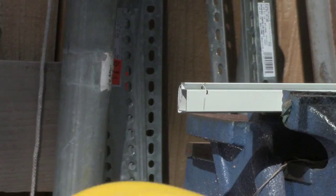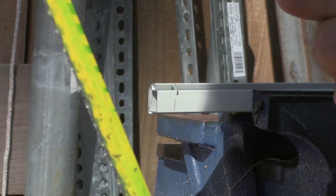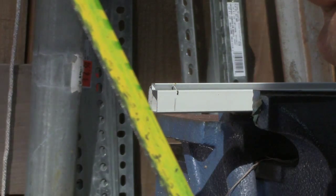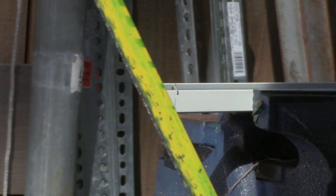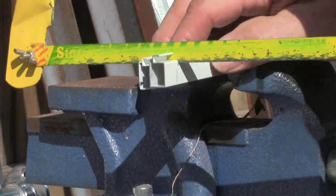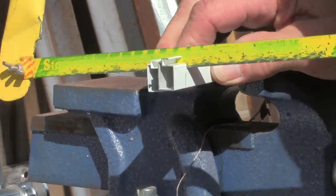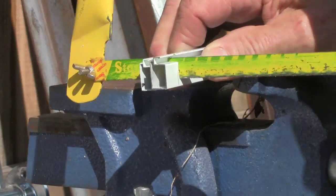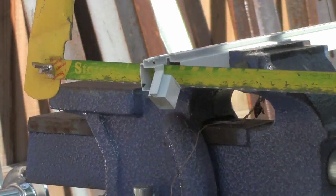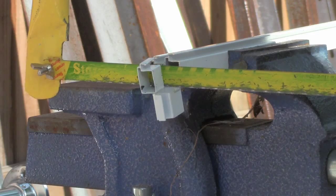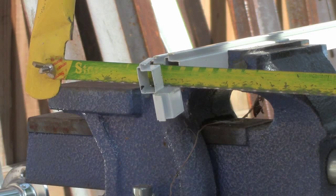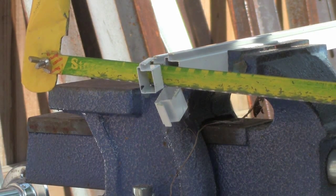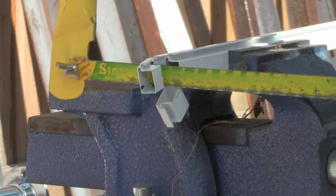When you want to cut this stuff, you want to get a hacksaw blade that's at least 32 teeth per inch. If you get anything bigger than that, in other words a 24 or 18, this thing is going to be hanging up all the time. Even a 32 teeth, it's kind of hard to get through this because this aluminum is so thin. You can see how much difficulty I'm having. I normally cut these on a miter saw with a 100 tooth blade. They make aluminum blades, but rather than buying an extra blade, just get a 90 or 100 tooth blade anyway. Find the cheapest one because you're not going to use them that much and they'll last a long time.